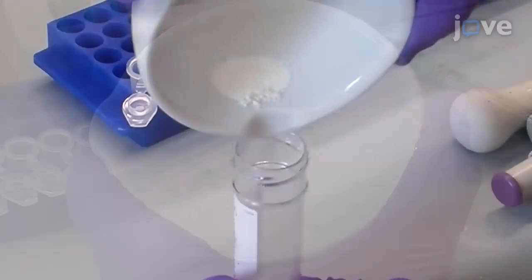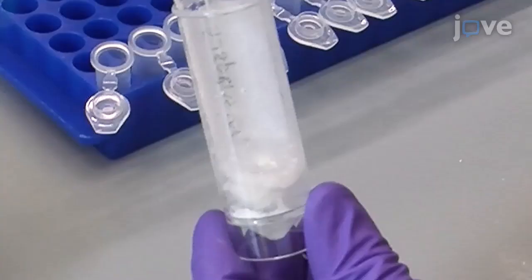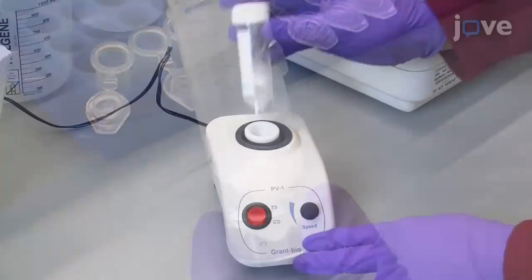Place the resulting powder into the labeled tube and re-suspend it in 10 milliliters of 100-millimolar phosphate-buffered saline, or PBS. Vortex the solution for one minute to maximize the enzyme extraction.